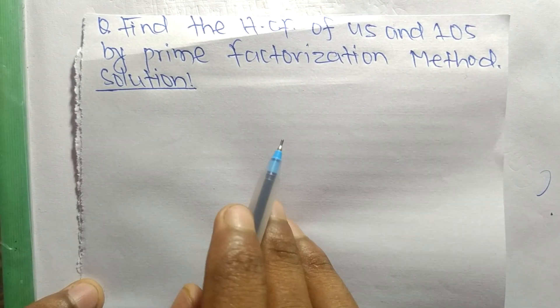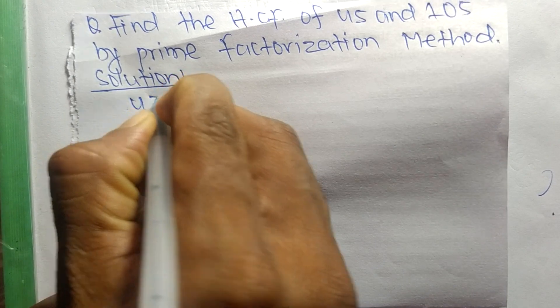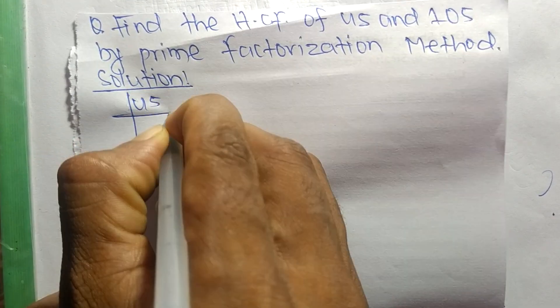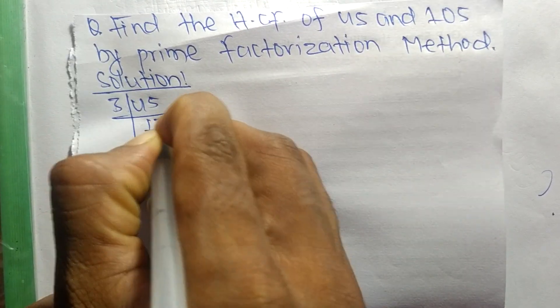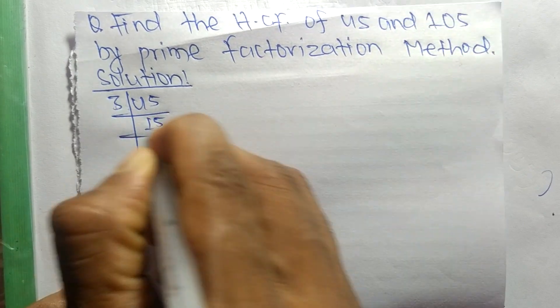First, we find the prime factors of 45. It is 3 times 15 equals 45.